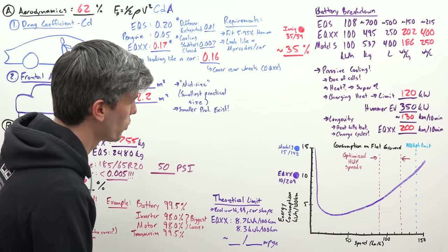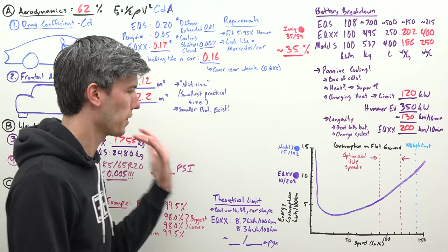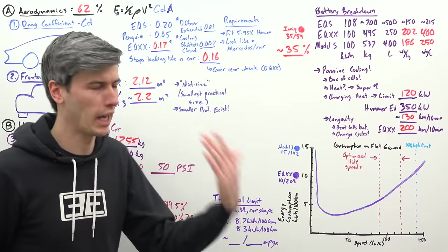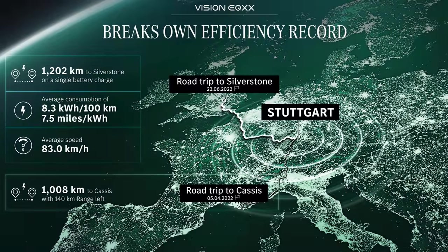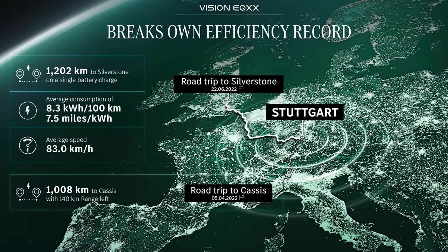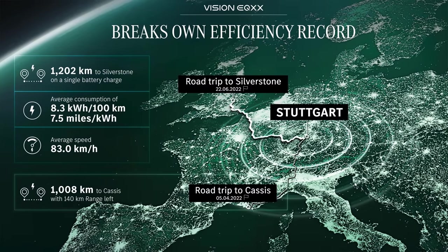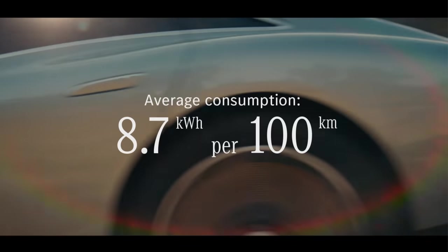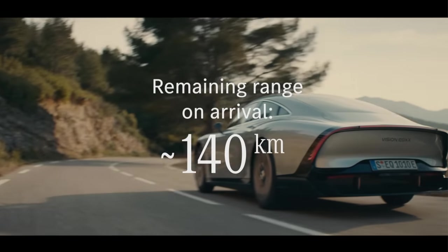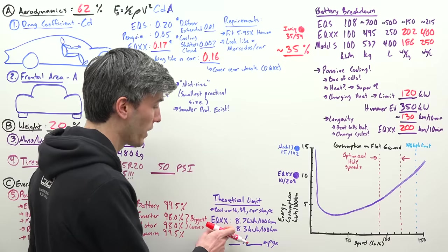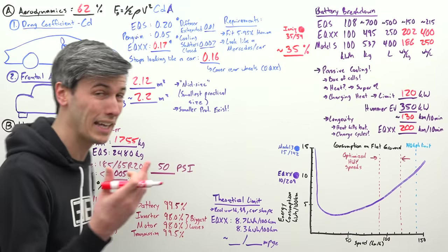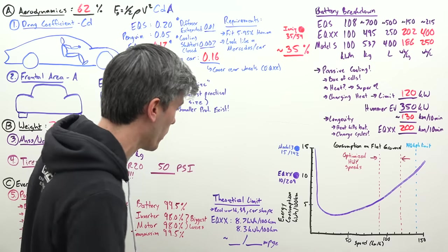Was Mercedes able to achieve their goal of driving a thousand kilometers? Yes they did it twice. They did two drives in Europe both times. They were easily able to achieve that 10 kilowatt hour per 100 kilometer. In fact they beat it quite significantly. The first one being at 8.7 kilowatt hours per 100 kilometers, easily hitting a thousand kilometers on their drive. And then the second one at 8.3 kilowatt hours per 100 kilometers. They hit 1200 kilometers on that drive.